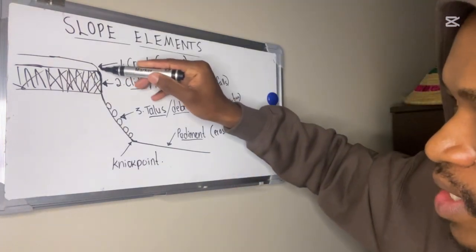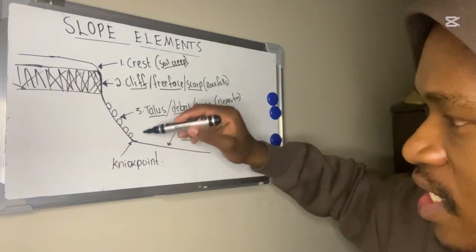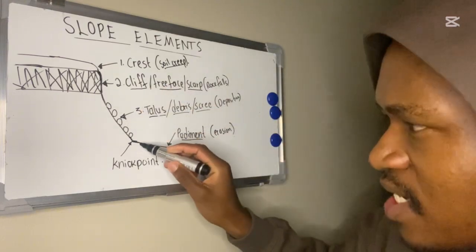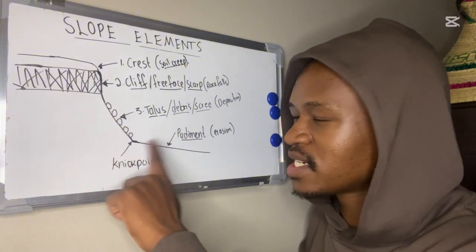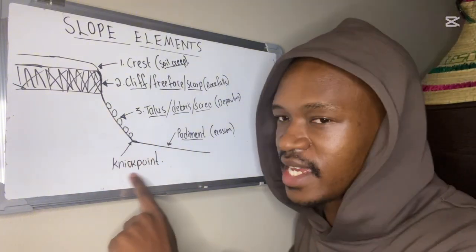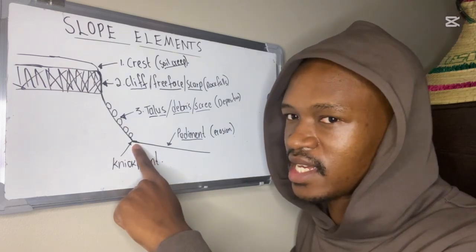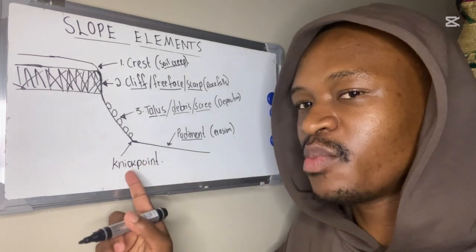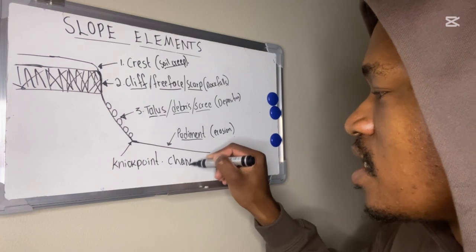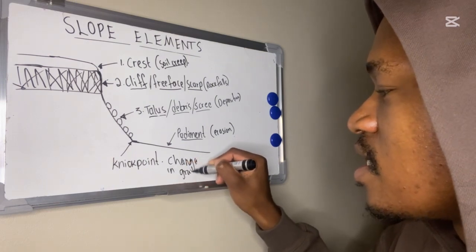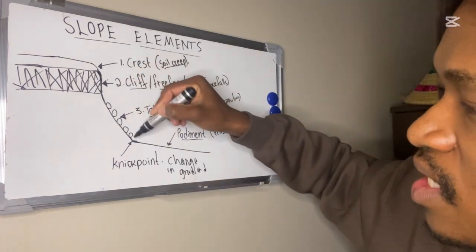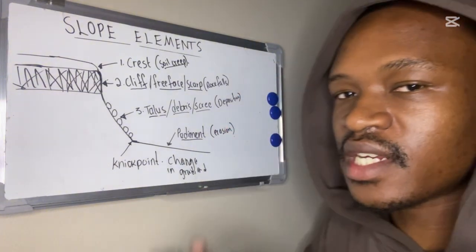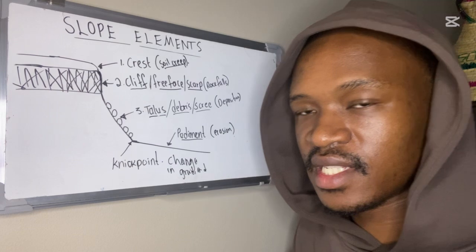If you look at this slope, between the talus and the pediment there is a sharp change in gradient. In geography, when there is a sharp change in gradient, we call that a nick point. You can see how steep it was coming down, and then it became gentle to form the pediment — that change in gradient is known as the nick point.